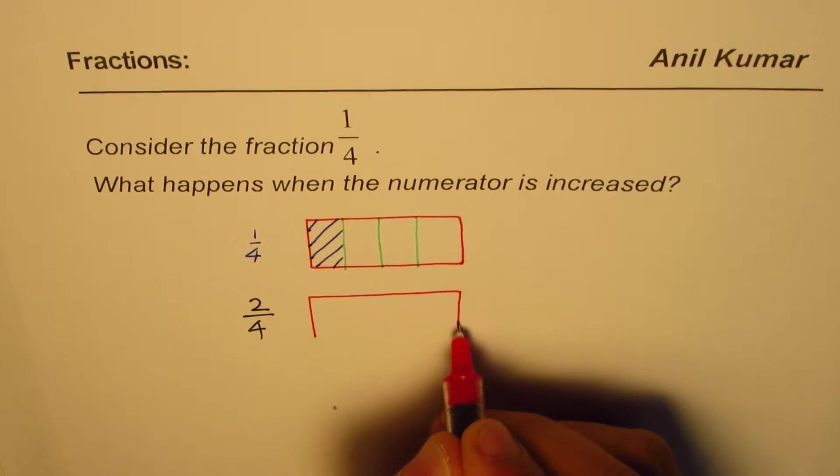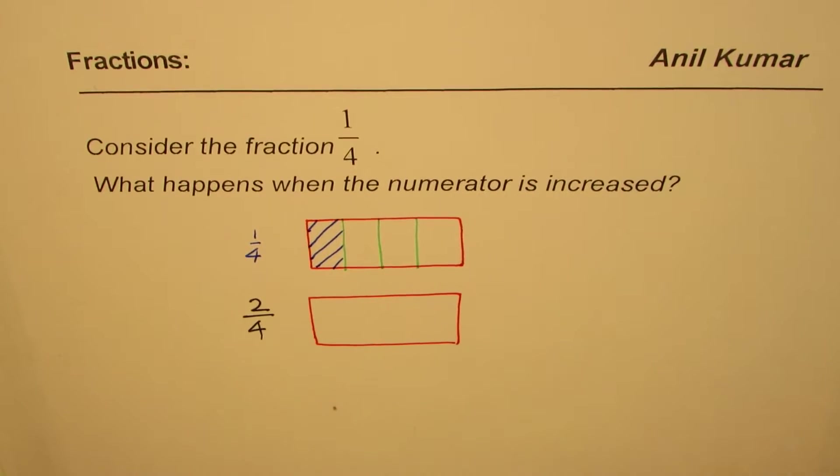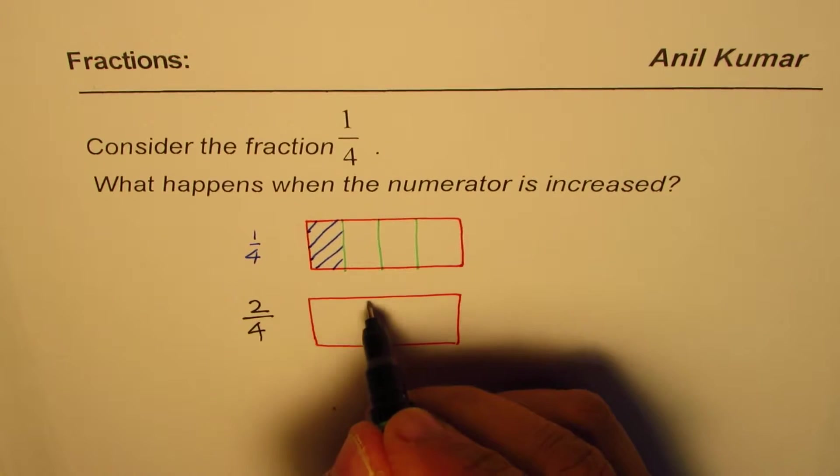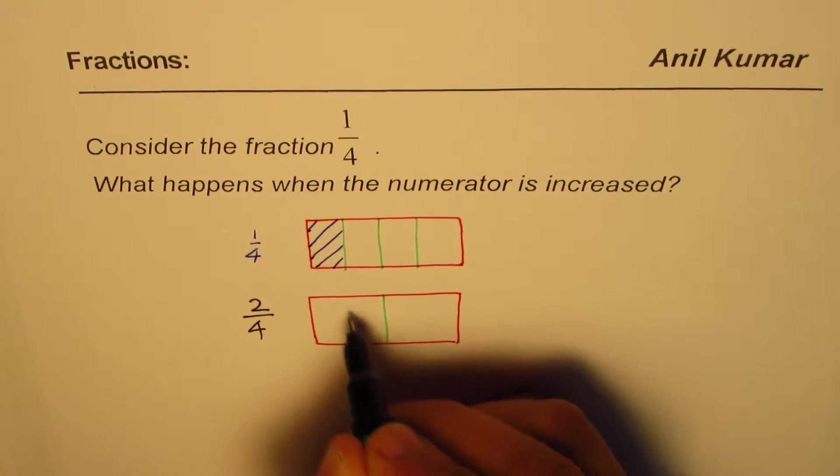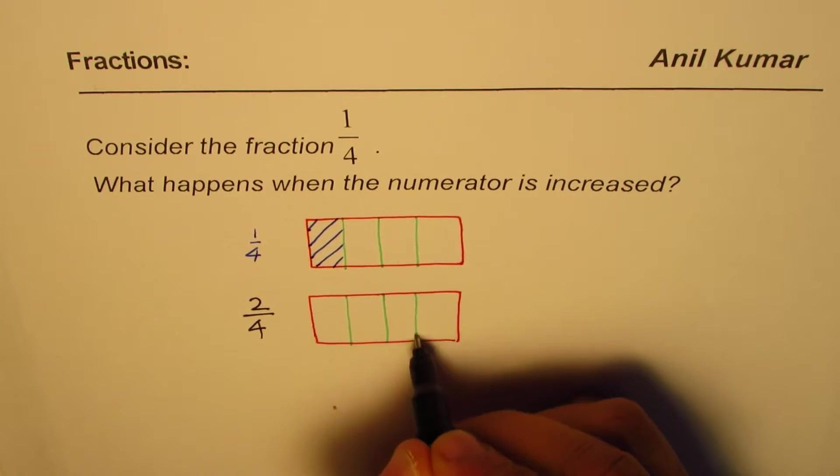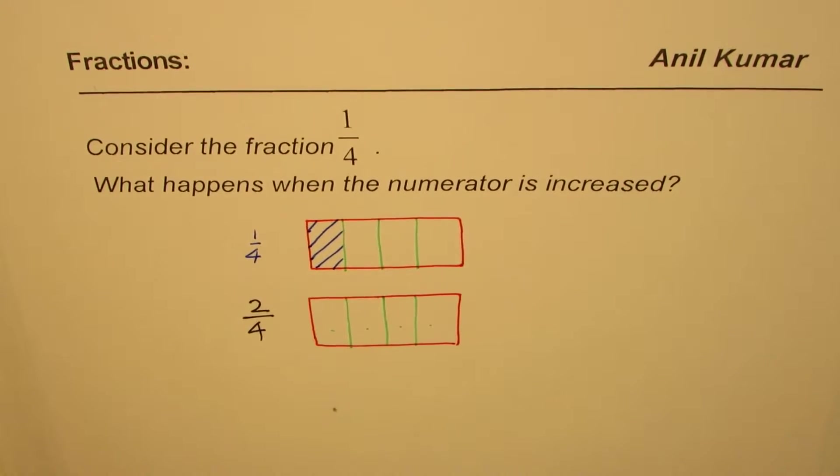So let's again go for the same chocolate bar. Divide it into 4 equal parts. That means 1 half and then again half of it, right? So 1, 2, 3, 4 equal parts.